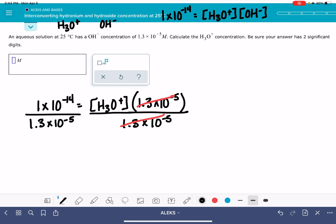1 times 10 to the minus 14 divided by 1.3 times 10 to the minus 5 is 7 point... Alex wants two significant figures. So 7.7 times 10 to the minus 10.